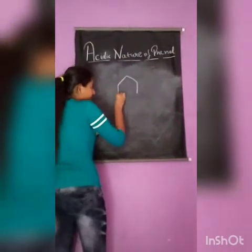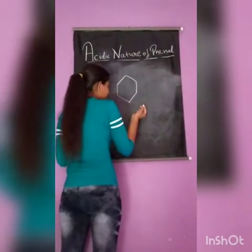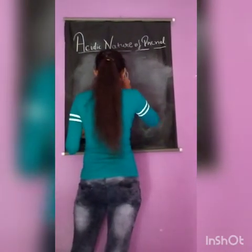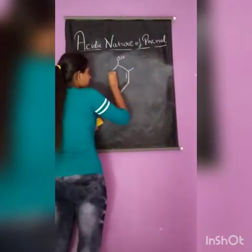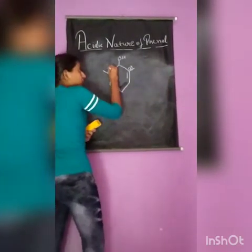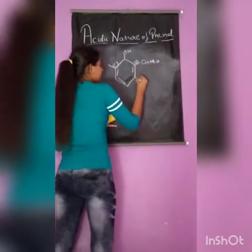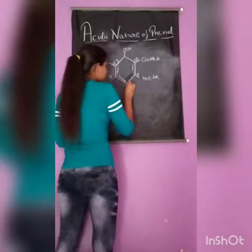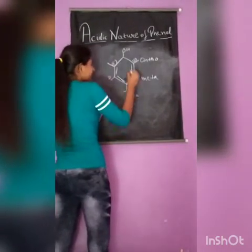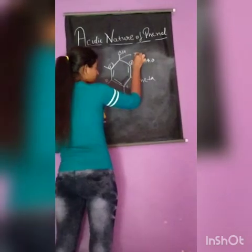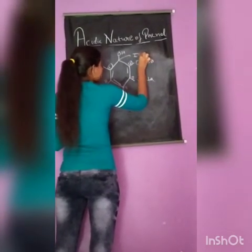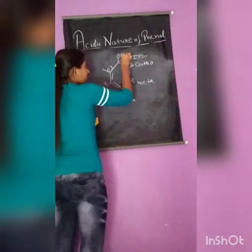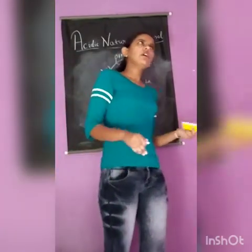Looking at the structure of phenol, there are ortho positions (position 1), meta positions (position 2), and a para position. There is also the ipso position. If any group is attached at either ortho, meta, or para position, it will affect the acidic nature of the phenol — it can either increase or decrease the acidic nature depending on the type of group.